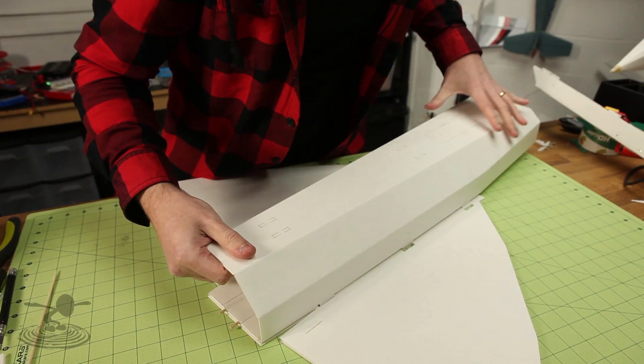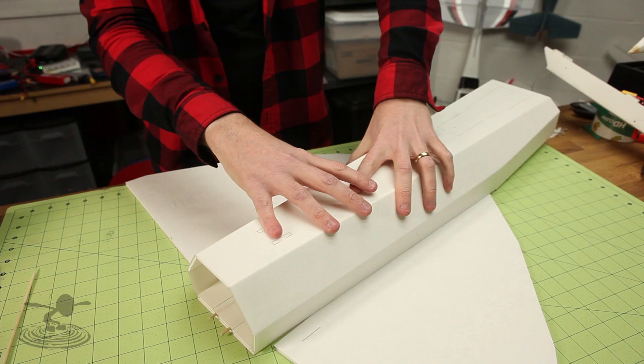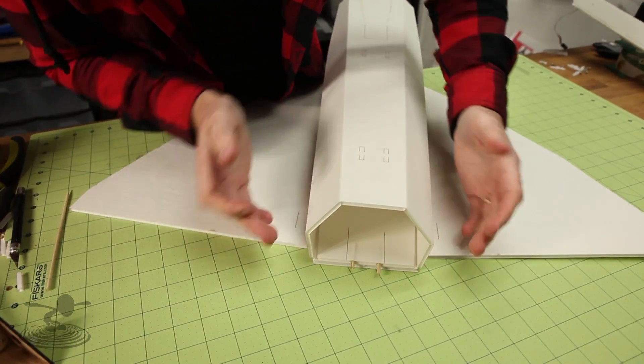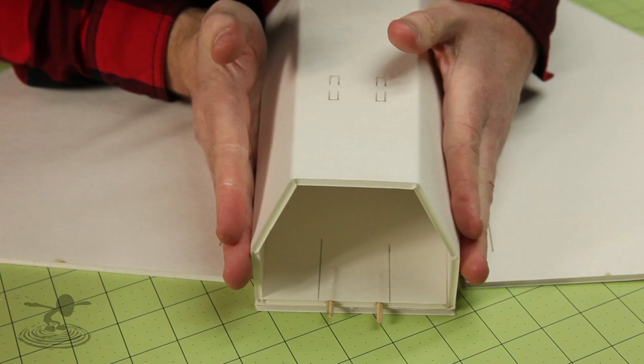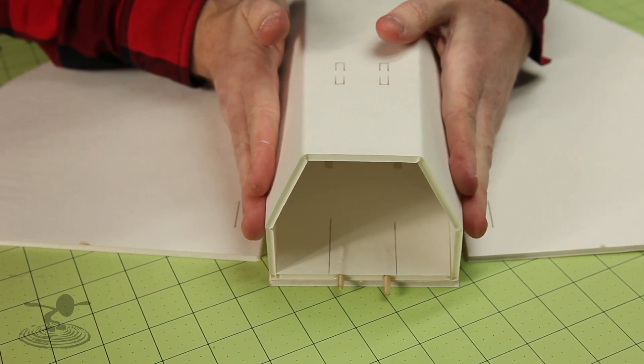Just put this in place. Test fit it in the slots. As you can see, it wants to shoot out the edges. So what you need to do is make sure that this is 90 degrees towards the wing, against the wing.